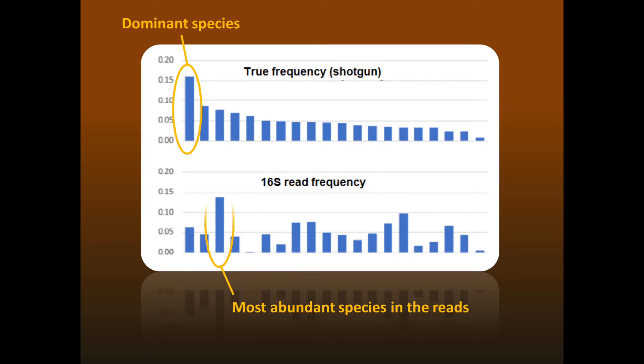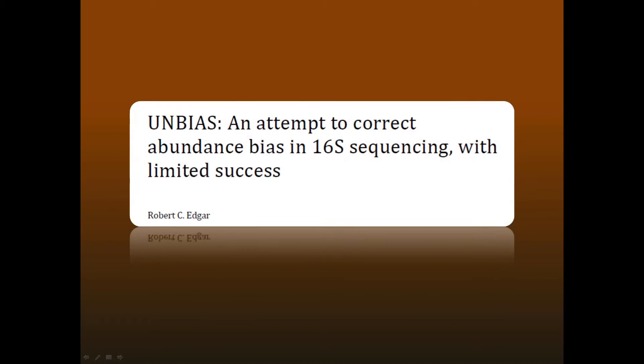If you can't measure frequencies, then there are some basic questions that you cannot answer. For example, you cannot determine the dominant OTU. As this example shows, the most abundant species in the sample may not be the most abundant species in the reads. You can read more about these problems in this paper.